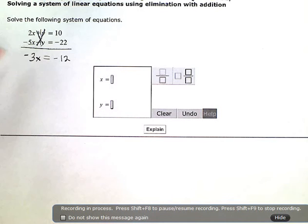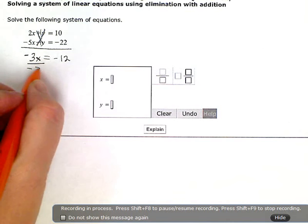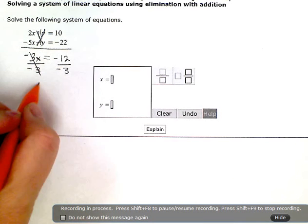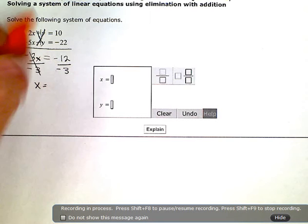Now I'm down to one equation in one variable that I can actually solve. So I'm going to divide out the coefficient of the negative 3 here, and that gives me x equals negative 12 divided by negative 3, which is positive 4.